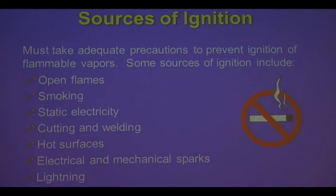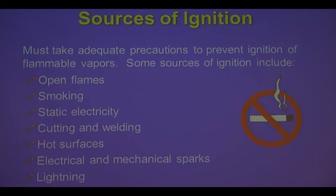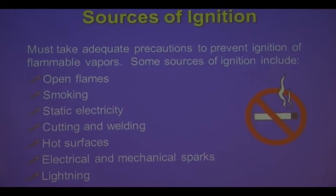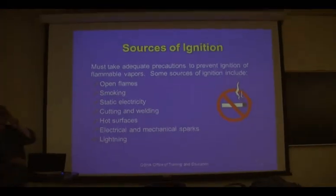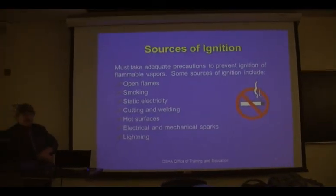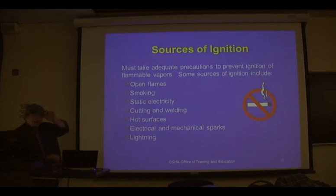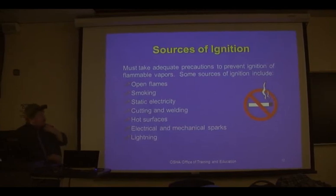Remember lighting — gasoline's flashpoint is around negative 49 degrees. Those incandescent light bulbs you screw in get very hot — you touch them and leave skin on the bulb. Just plugging in a 100-watt incandescent light bulb can get hot enough to exceed the flashpoint of different flammable liquids. All those things you need to think about.